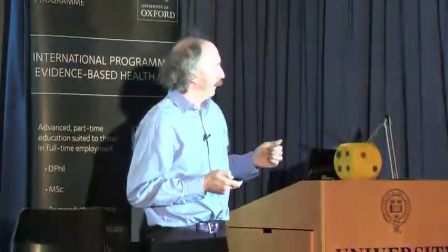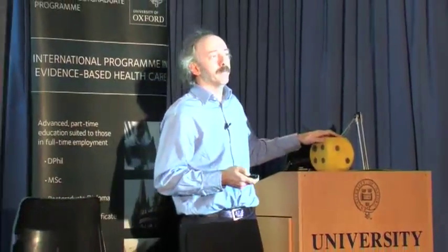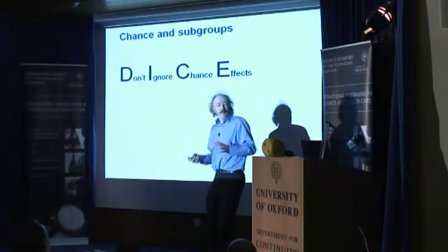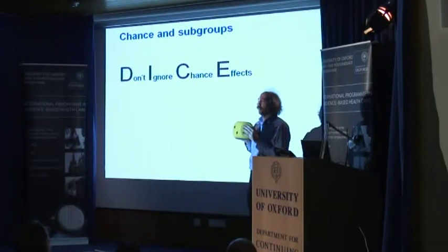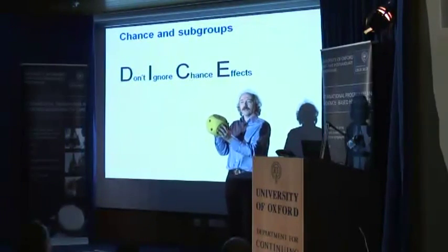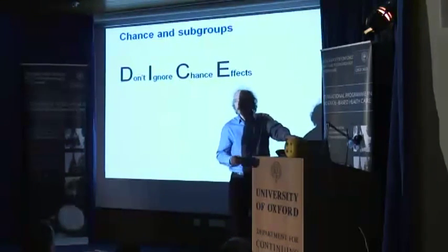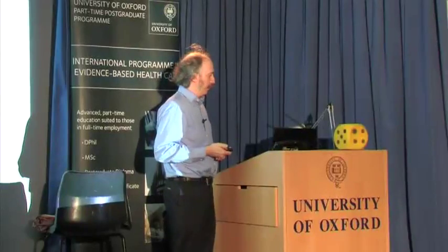So what does 'don't ignore chance effects' mean? There's a clue. What's the acronym for 'don't ignore chance effects'? DICE. That's where it comes from — whoever named this study was obviously a statistician researcher from many years ago who said: I will call this 'don't ignore chance effects.' DICE is 'don't ignore chance effects,' or 'don't ignore chance effects' is DICE.